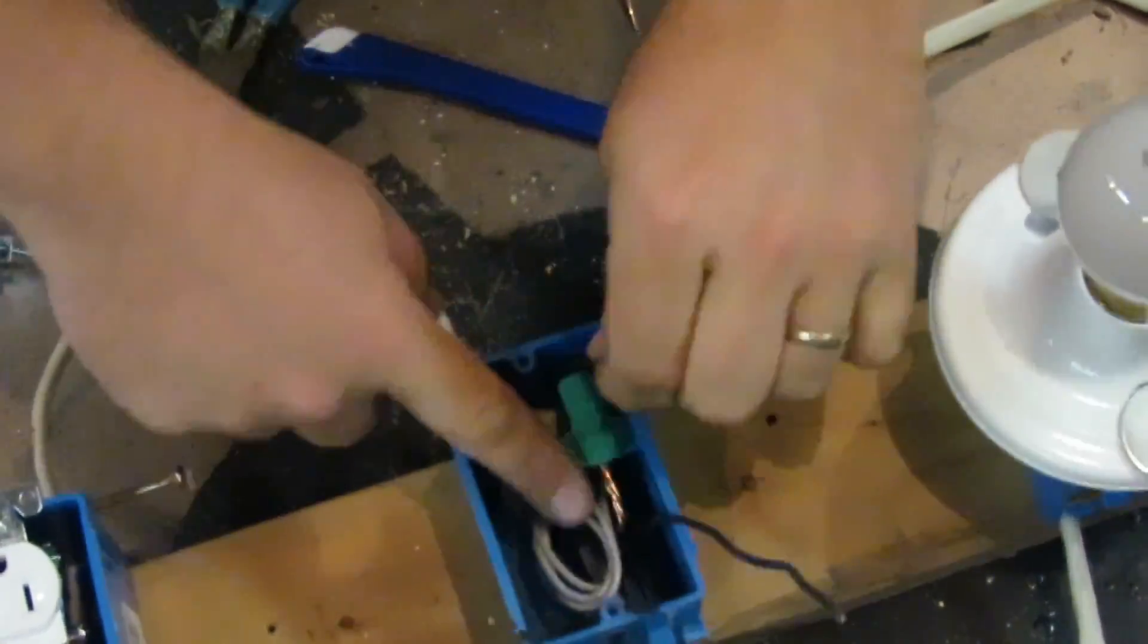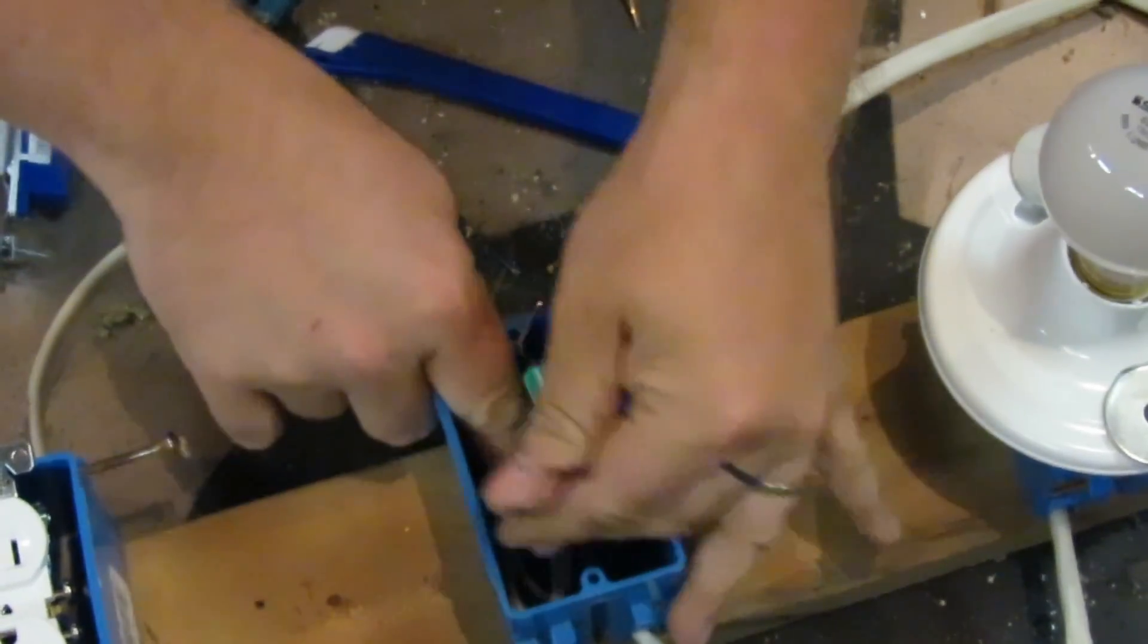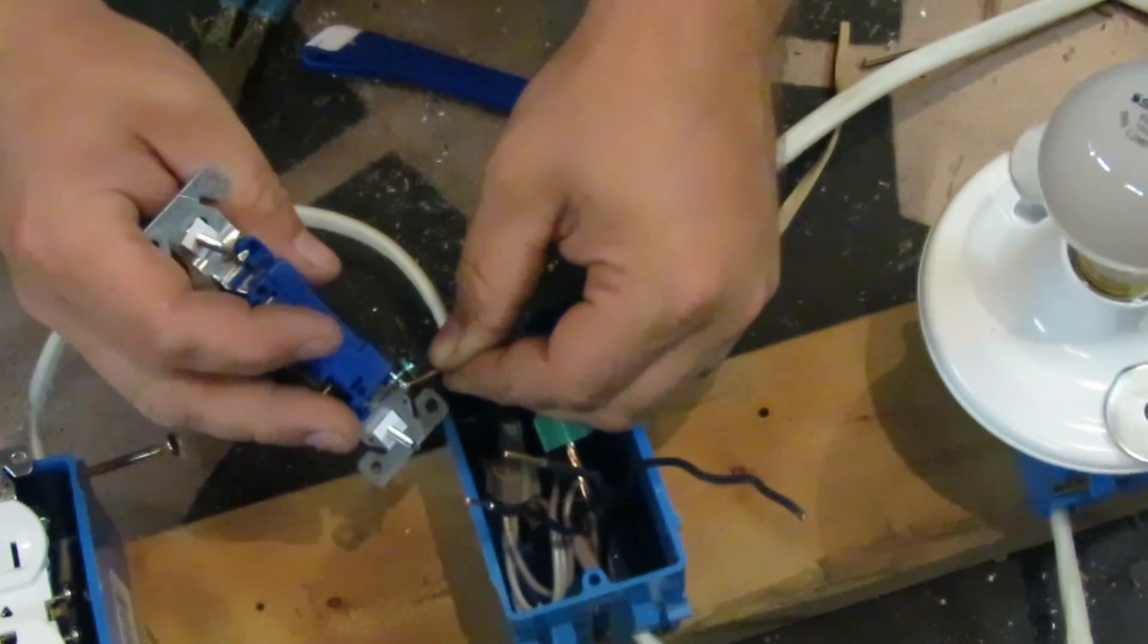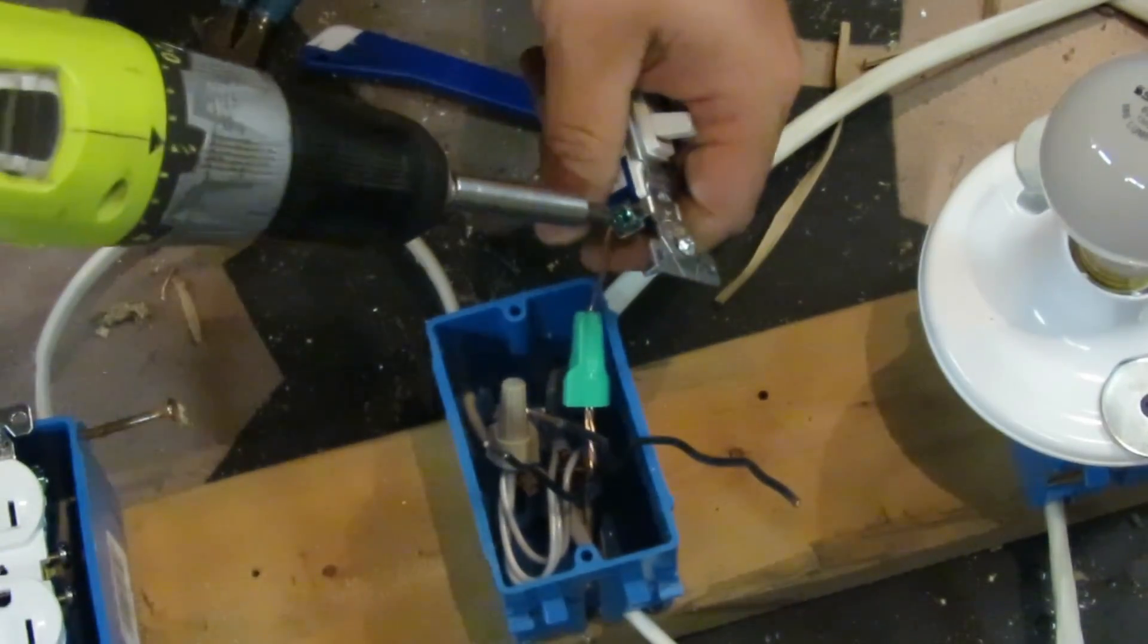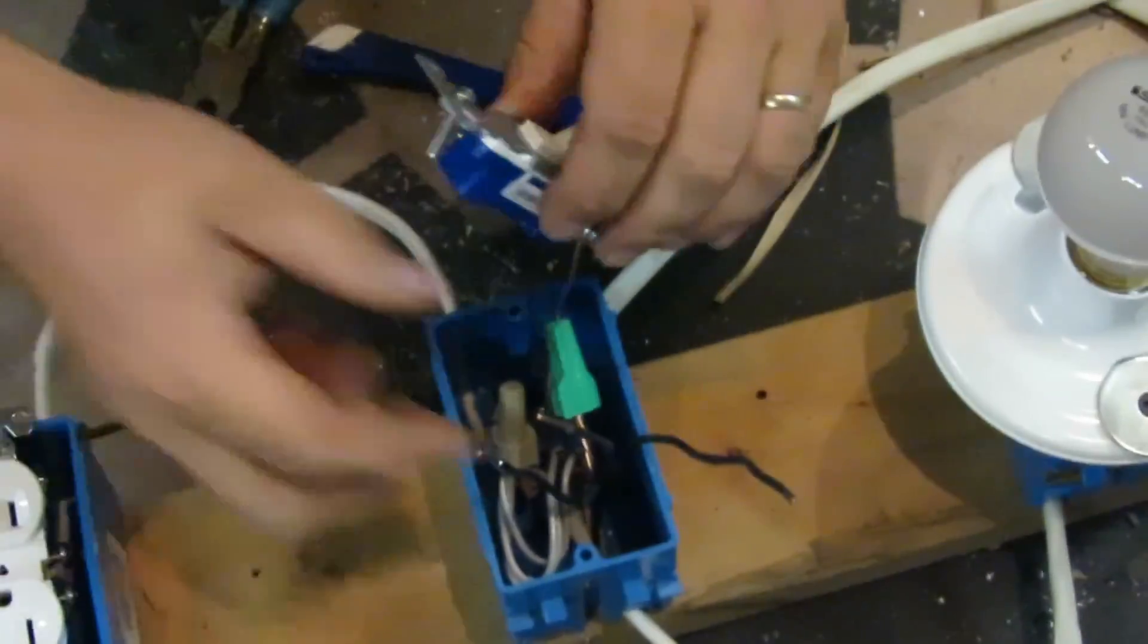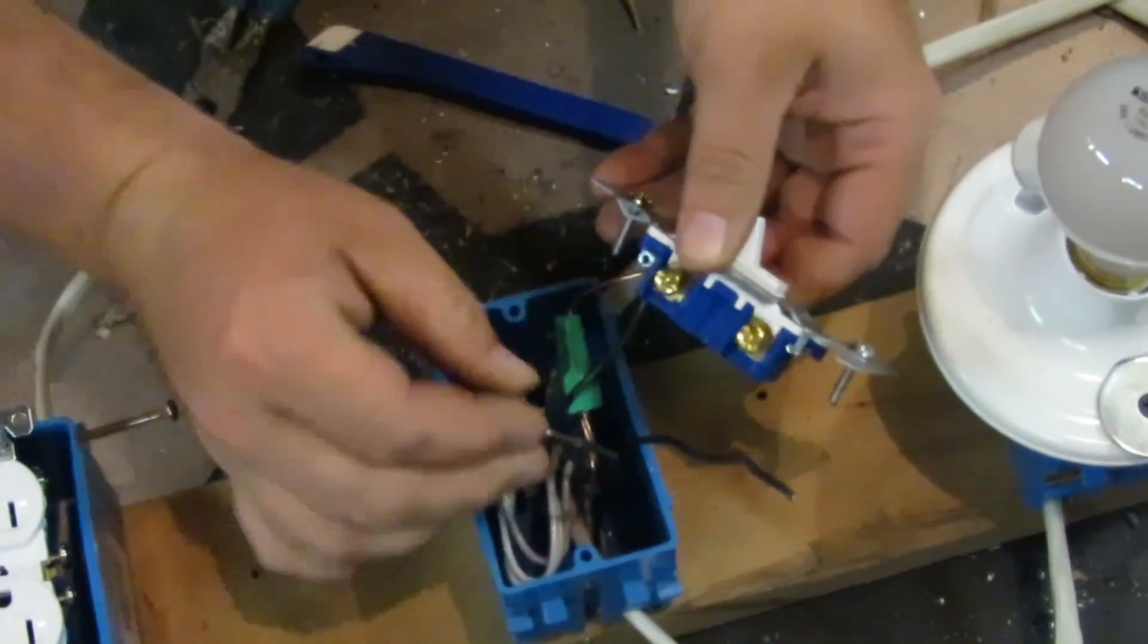Okay, so after you have your drywall or whatever you have hung up, come back and you pull your black wires out and your ground wire. So you just want to wrap your ground wire around the green screw and tighten it down.